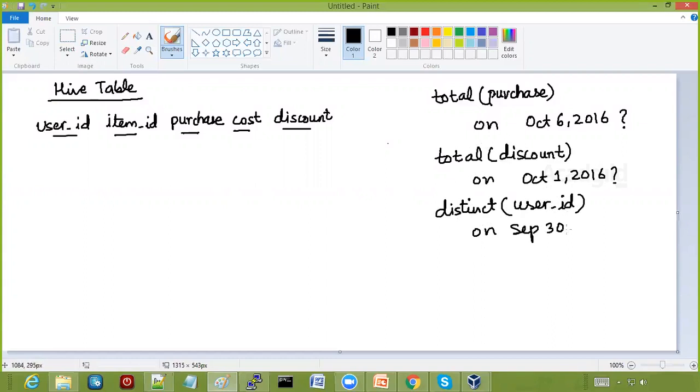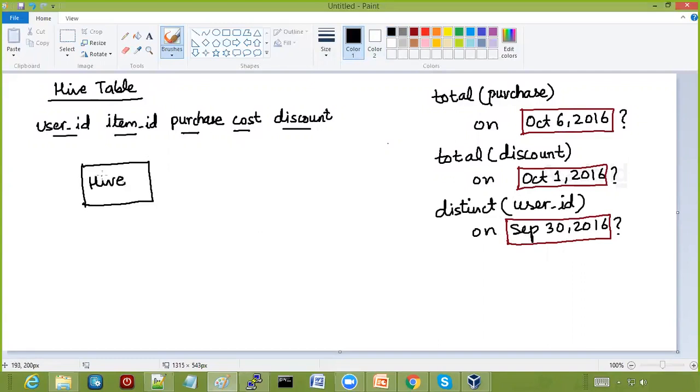Suppose these are the questions. If you closely see, the common pattern is the date. We want to take the record for some date, maybe a range of dates or maybe some specific dates. So in our use case, just imagine two scenarios. The first is we are having a hive table, and every hive table represents some directory of HDFS,